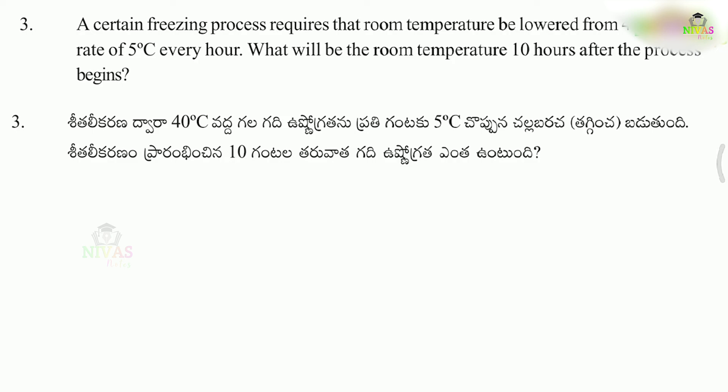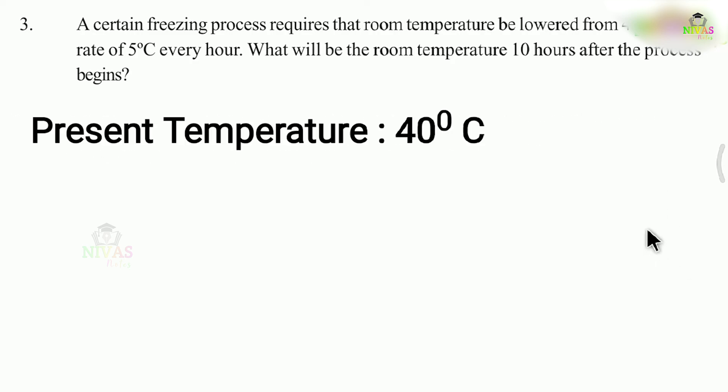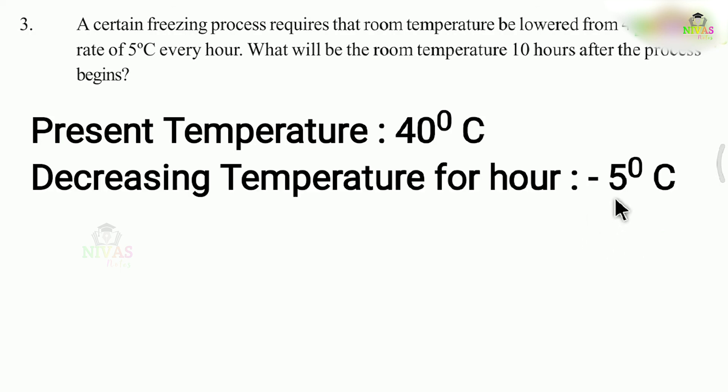What is the starting room temperature? We have to answer the problem. First of all, the present temperature is 40 degrees Celsius. The decreasing temperature per hour is 5 degrees Celsius. Room temperature is 40 degrees Celsius and 1 hour is 5 degrees Celsius.